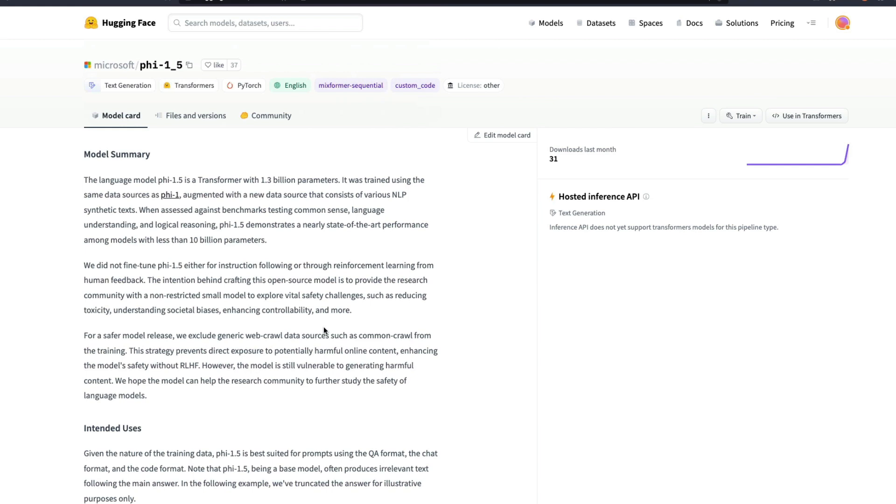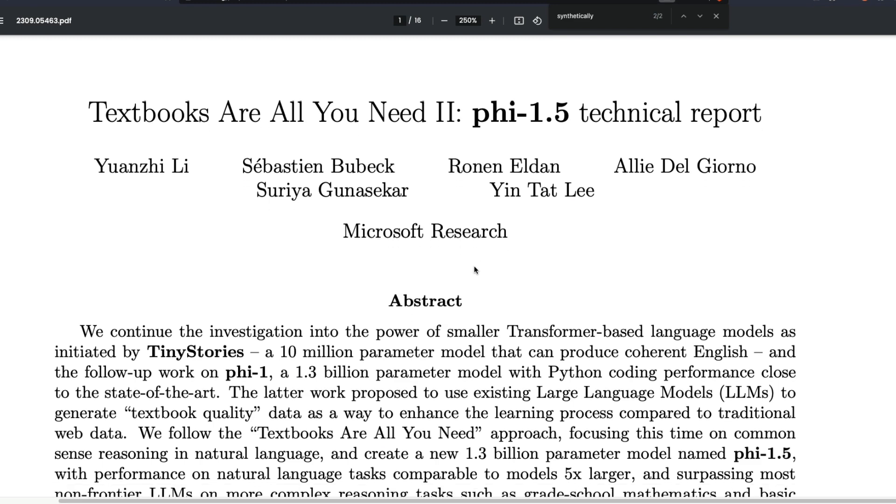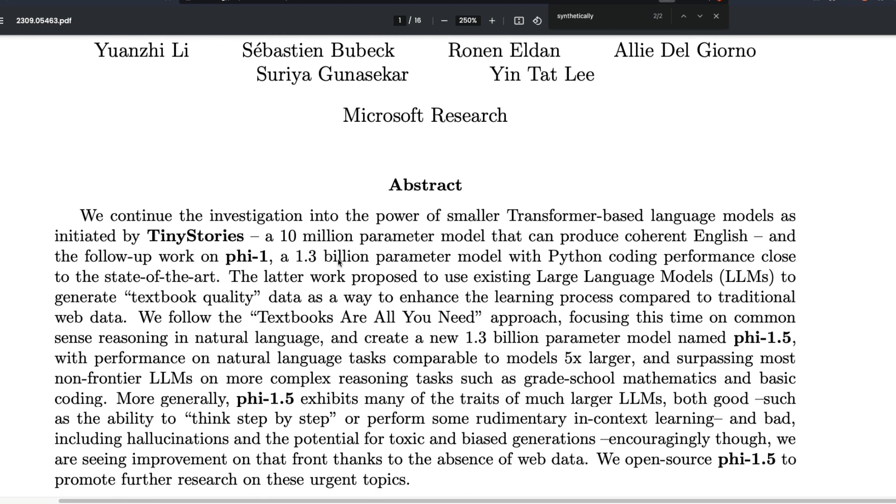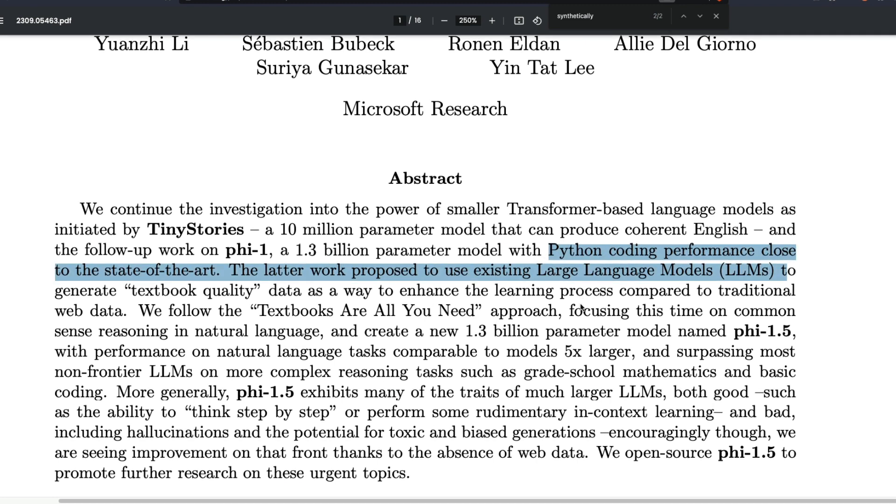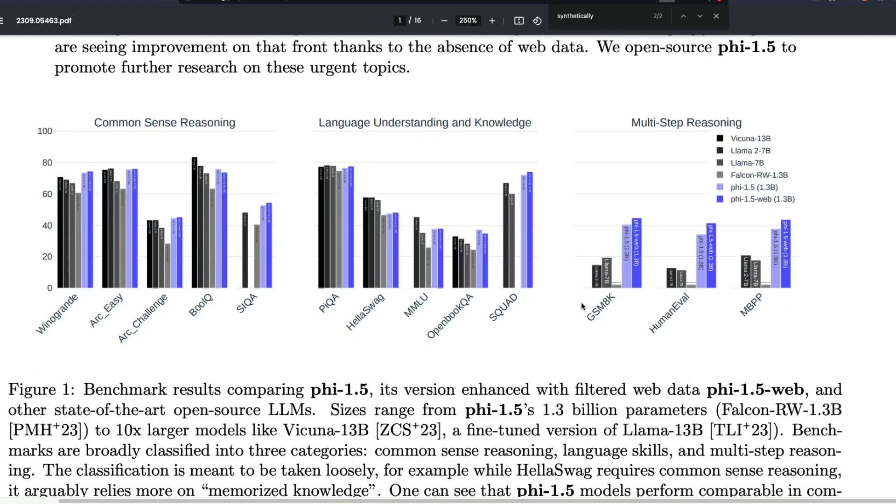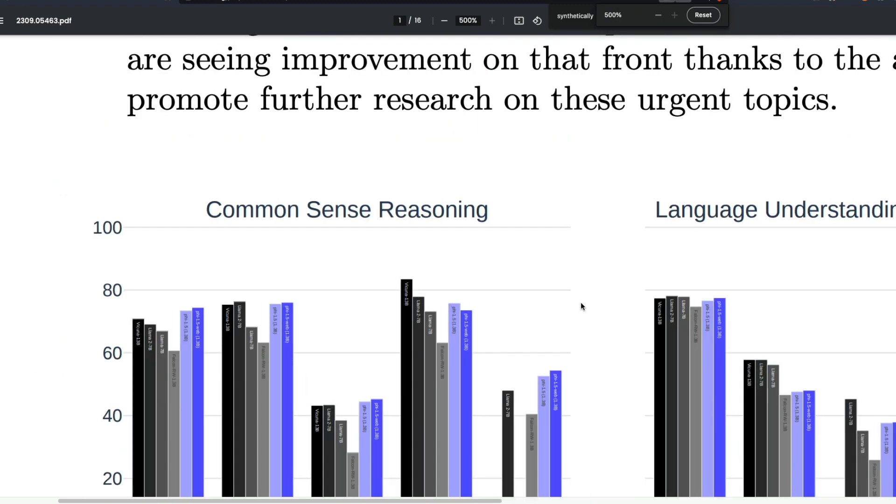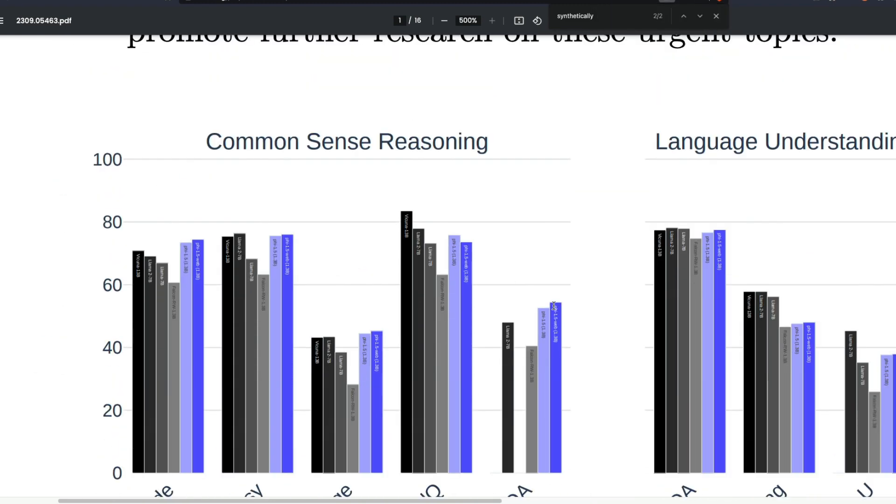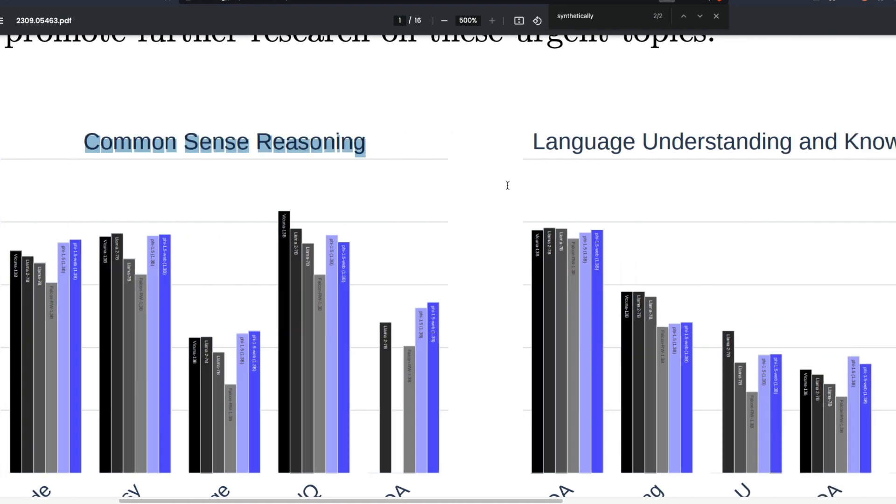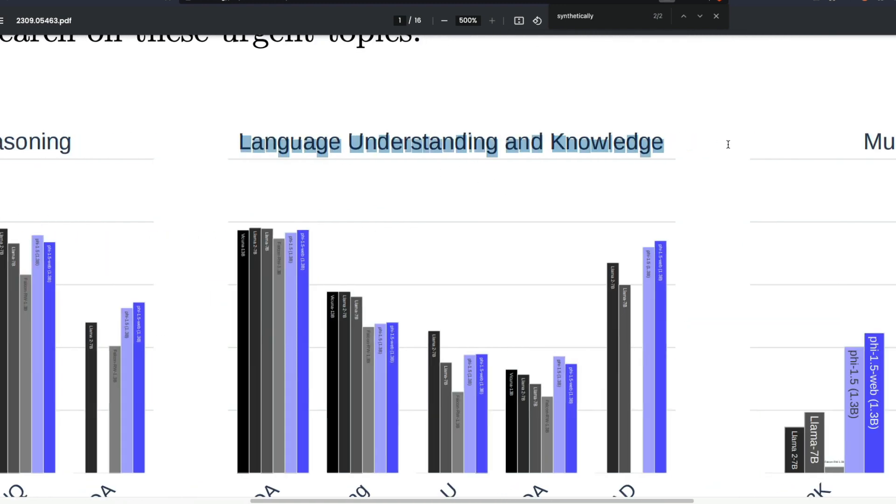The reason why this model is quite interesting and quite exciting is because without instruction fine tuning, without RLHF, without fancy data set, like it's not a huge data set, still this model is managed to perform really good. It's a 1.3 billion parameter model that does really good with Python coding performance, close to the state of the art under three different sections. Common sense reasoning is one section where you have got like the basic benchmarks, language, understanding and knowledge.